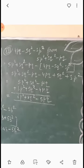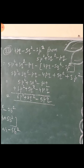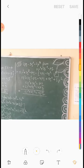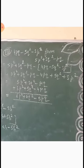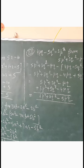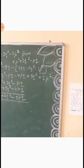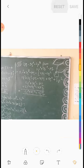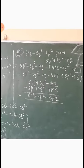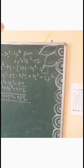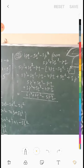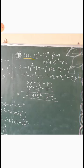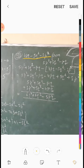अब आते हैं 8th part पर। subtract करना है 4p³ minus 5k² minus 3p² from 5p² plus 3k² minus p³। तो इसमें से subtract करना है, तो इसको हम पहले लिखेंगे: 5p² plus 3k² minus p³। minus के बाद bracket start करेंगे, और जिसको subtract करना है उन तीनों को bracket में लिखेंगे.